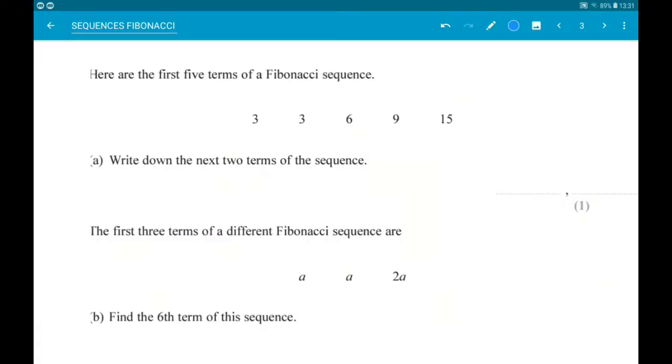First up, here are the first five terms of a Fibonacci sequence: 3, 3, 6, 9, 15. Write down the next two terms. So the next is 9 add 15, so that's 24, and then the next is 15 add 24, which is 39.